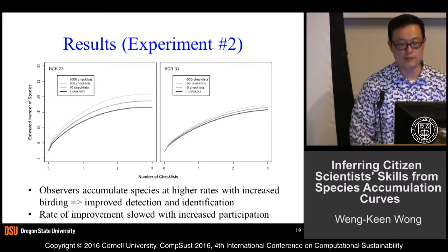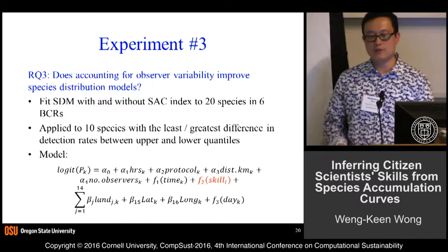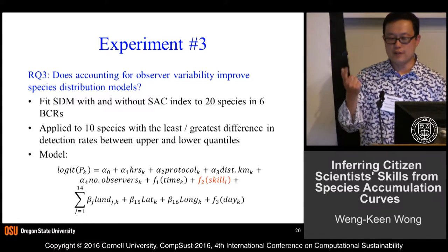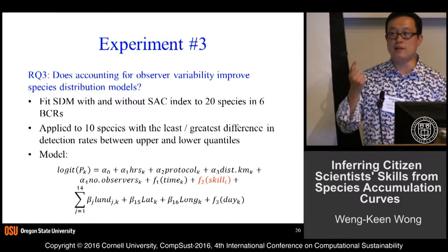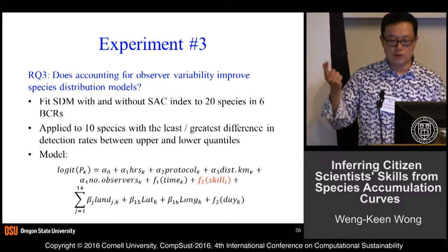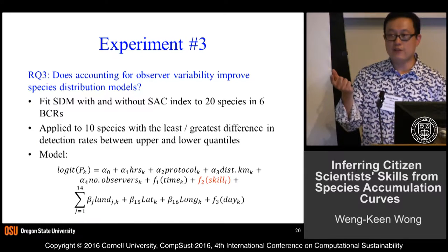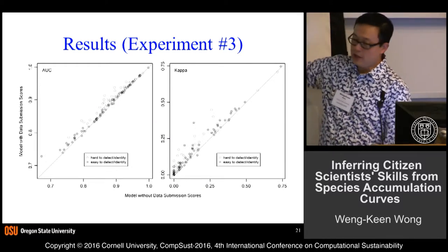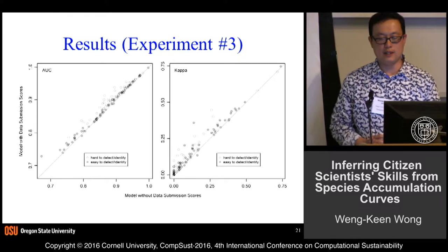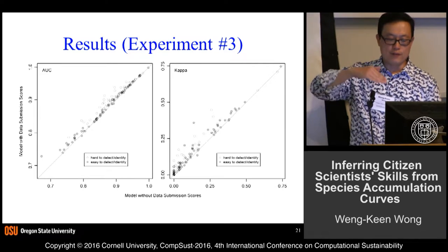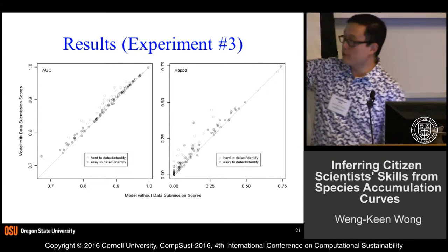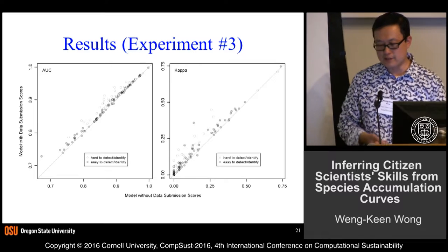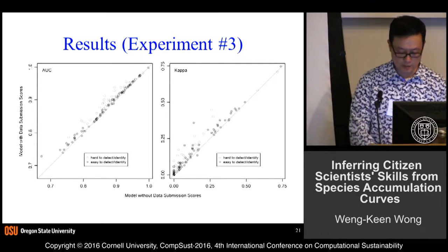The third experiment explores whether accounting for observer variability improves species distribution models. The idea is to take the species accumulation curve index and include it as a feature or covariate in the model. These graphs plot model performance with and without the index, and everything is above the diagonal line — both in terms of AUC and kappa — suggesting that adding the SAC index does in fact help improve these models.